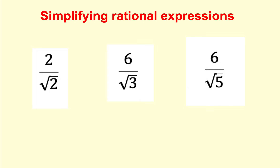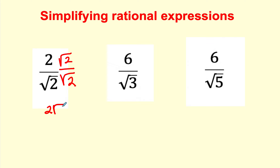Let's take a look at some algebra review. When we want to simplify rational expressions, we don't want to leave a square root in the denominator. So what we want to do is multiply the numerator and denominator by the number 1. When I multiply by this particular number 1, the numerator will be equal to 2√2. And the denominator, √2 times √2, is √4. And √4 is the number 2. We can do a little reducing, and the simplified version is √2.